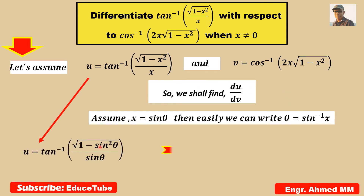So taking this here, we only need to change x. In place of x, we write sin squared theta in the numerator and sin theta in the denominator. Now 1 minus sin squared theta — as we know sin squared theta plus cos squared theta equals 1 — so 1 minus sin squared theta equals cos squared theta. Doing the square root of that, we get cos theta. So this cos theta by sin theta, this ratio, it will be cot theta.